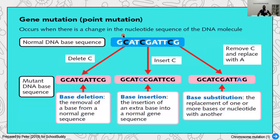Let's look at genetic mutation. We have a normal base sequence. If we delete C, it is removed — producing a mutant DNA strand that will produce a different type of protein, since DNA produces protein. If we insert an extra C into a sequence, the DNA also codes for a different protein. If we replace a normal C with another base, that is substitution, and this DNA now codes for a different protein. So at the base sequence level, mutations can be deletion, insertion, or substitution.